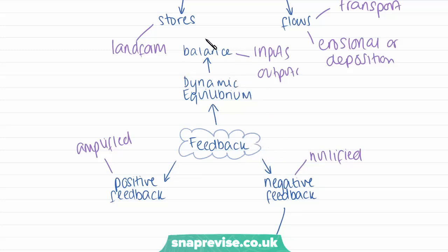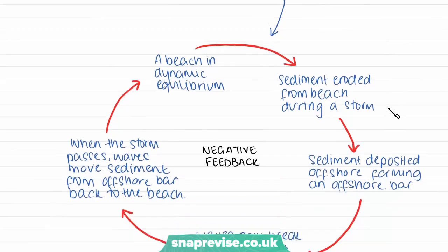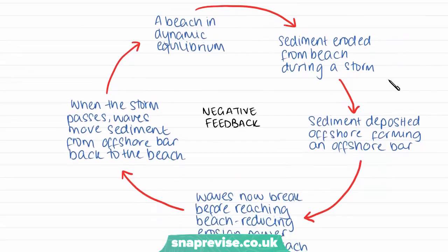However, this is not always the case because we find different rates of inputs and outputs, and this is what causes feedback cycles to try and regulate the system. An example of negative feedback within a coastal system relates to the movement of sediment on beaches during a storm event.